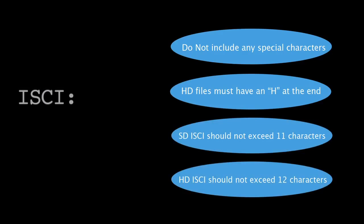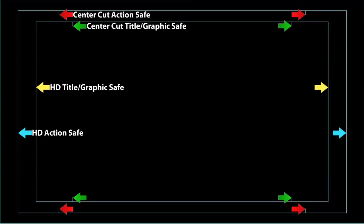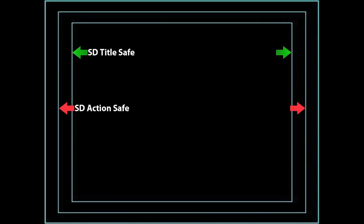The Ad ID should be no longer than 11 characters for SD and 12 for HD, which includes the H. Here is an SD Ad ID example, and here is an HD Ad ID example. All files, HD and SD, must be within their respective title safe areas.